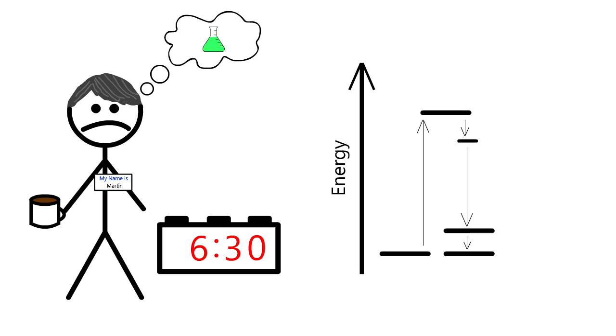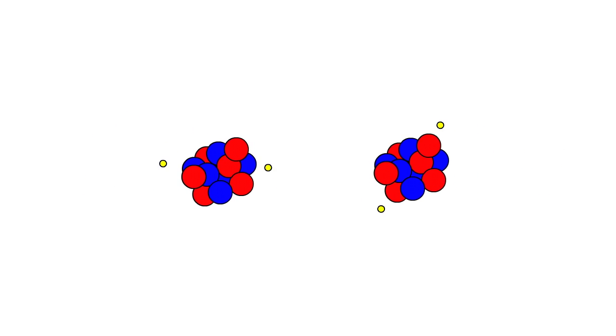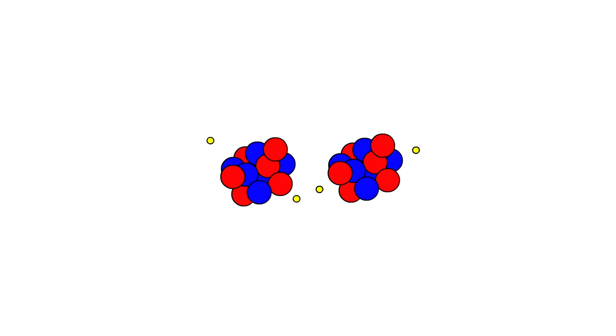Now you might be asking yourself what in the world does that have to do with color? Bear with me. Remember that atoms contain dense nuclei with surrounding electrons. When they bond together to form molecules, those electrons are shared among the molecule.